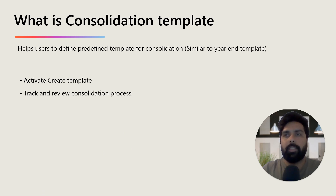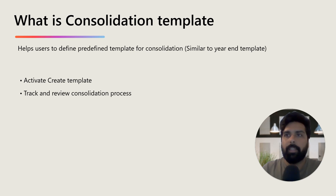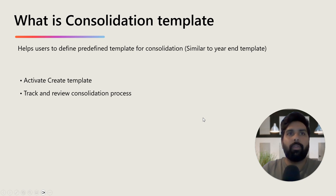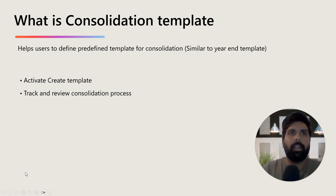This does not change anything from the process perspective — your process remains the same, it just gives you a better user experience. To use it, you need to enable the feature, which is available in version 10.0.40. Once the feature is enabled, you can create a template, run the consolidation process for the required legal entities based on the template, and track all changes and the consolidation process at different stages.